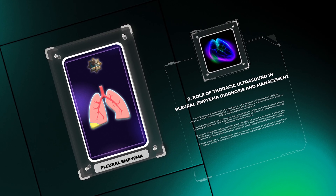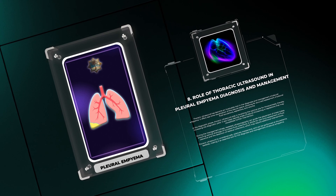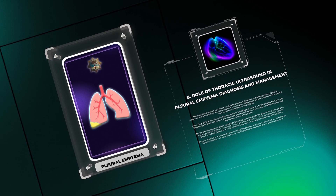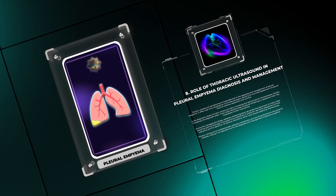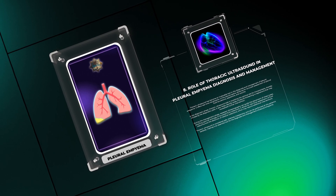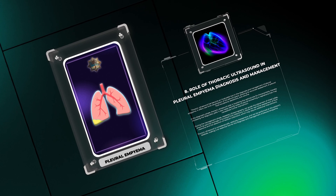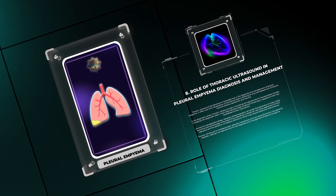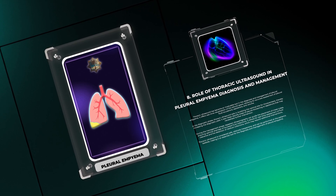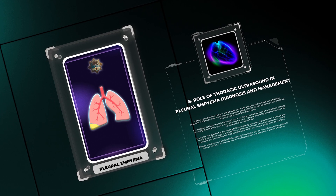During the management phase, repeated ultrasonography can guide the placement of chest tubes, ensuring optimal drainage of loculated fluid collections. It allows for real-time assessment of fluid clearance and detection of residual collections which may require additional interventions. Thoracic ultrasound is considered safe, relatively inexpensive, and can be performed at the patient's bedside.